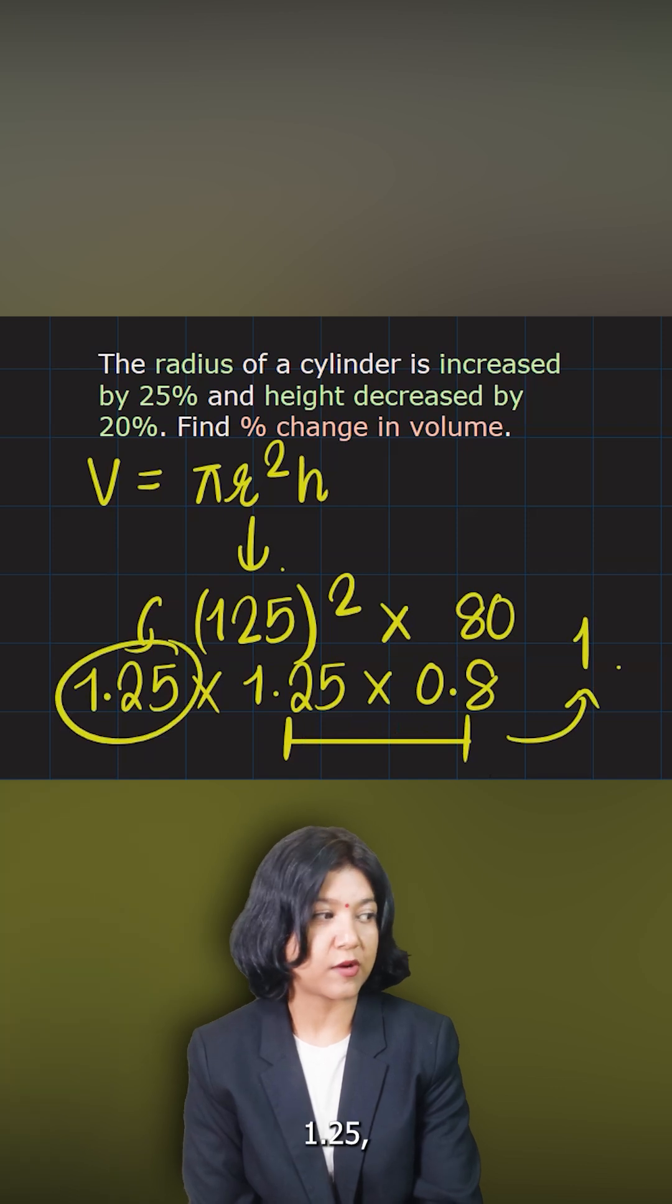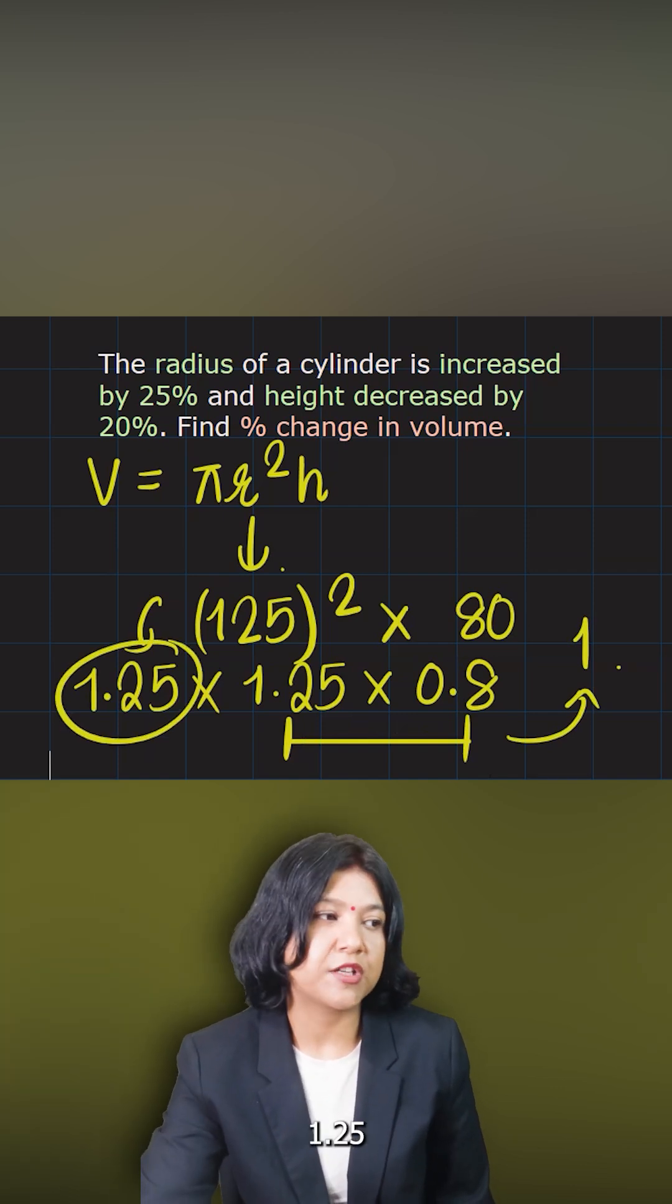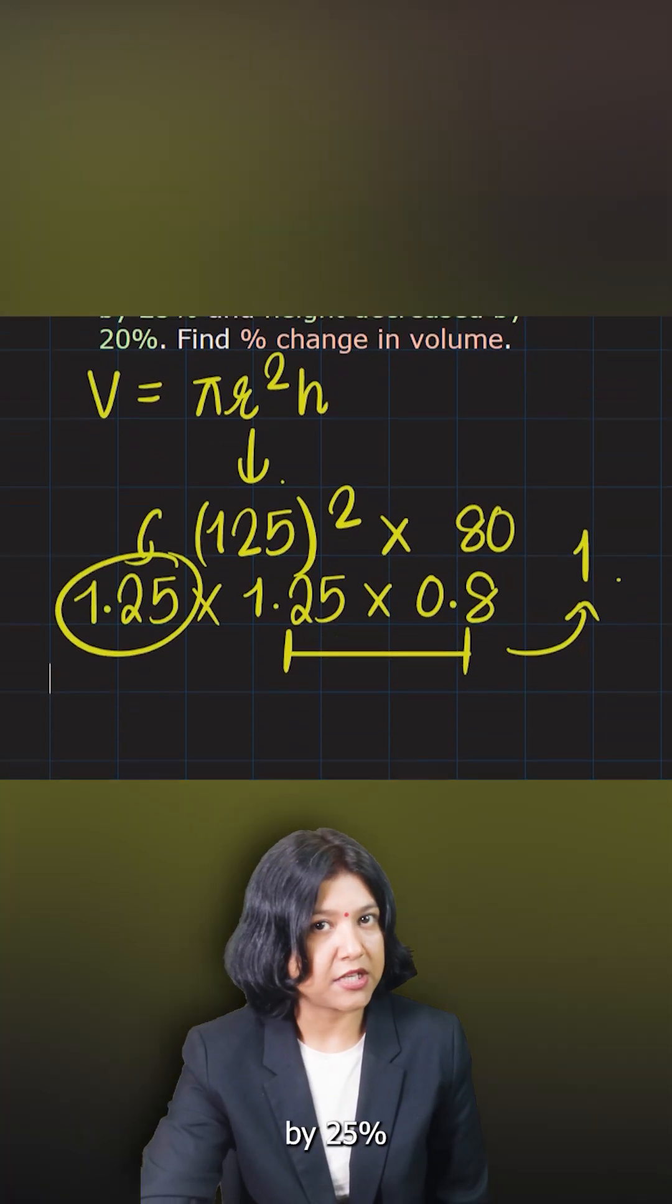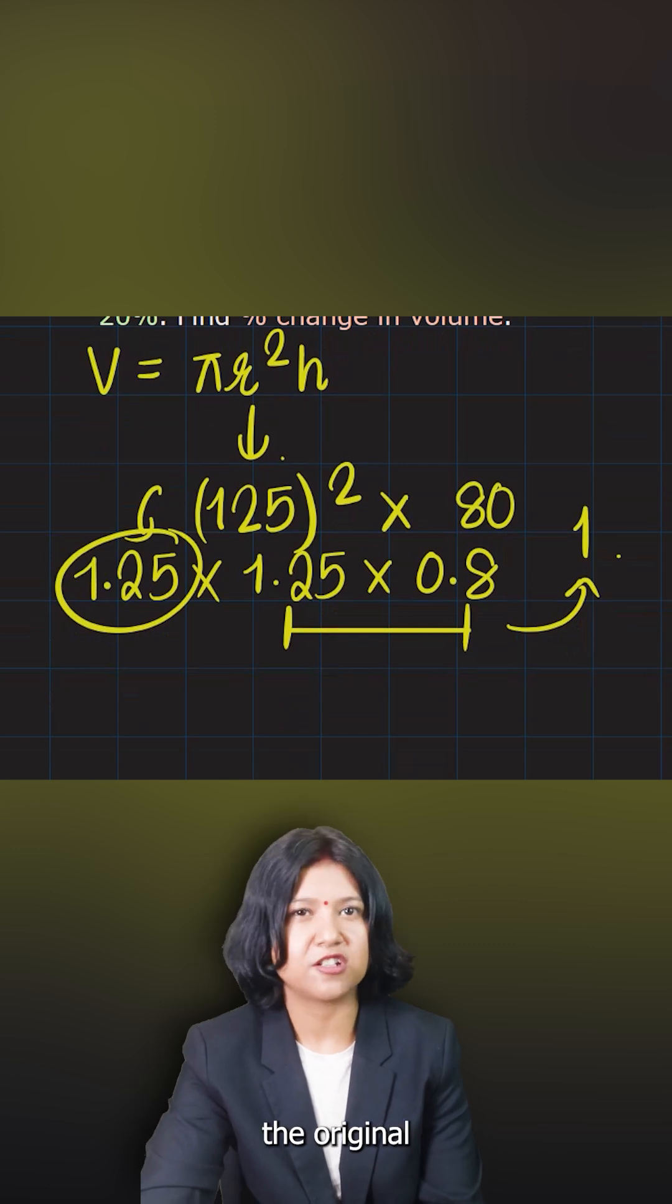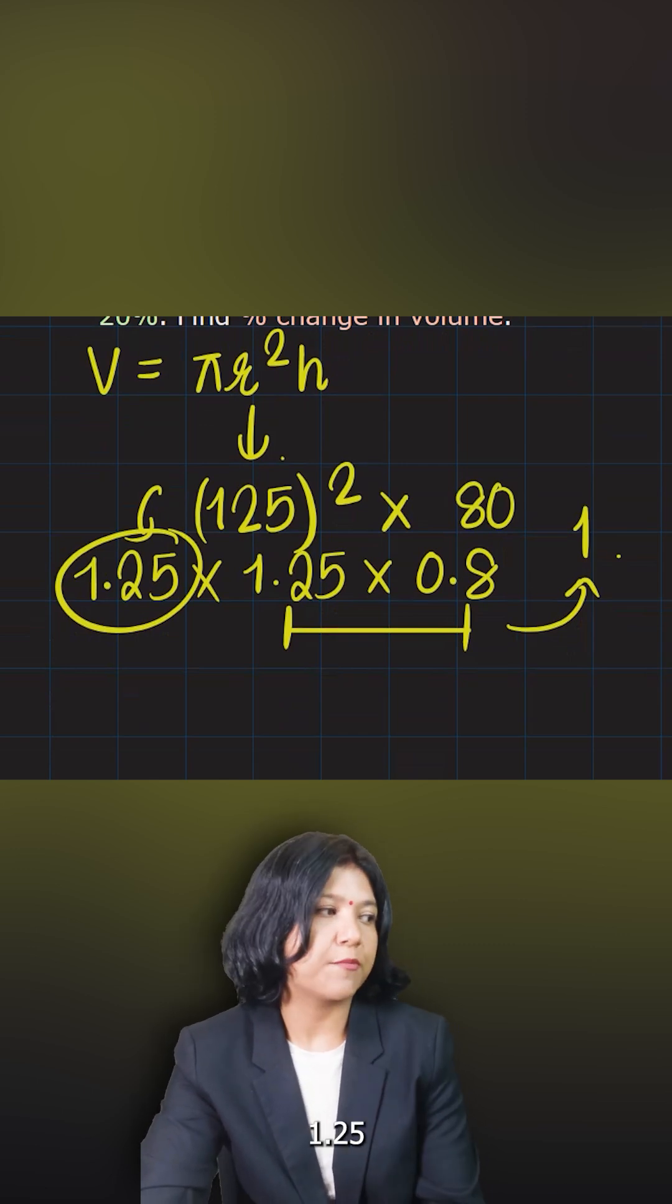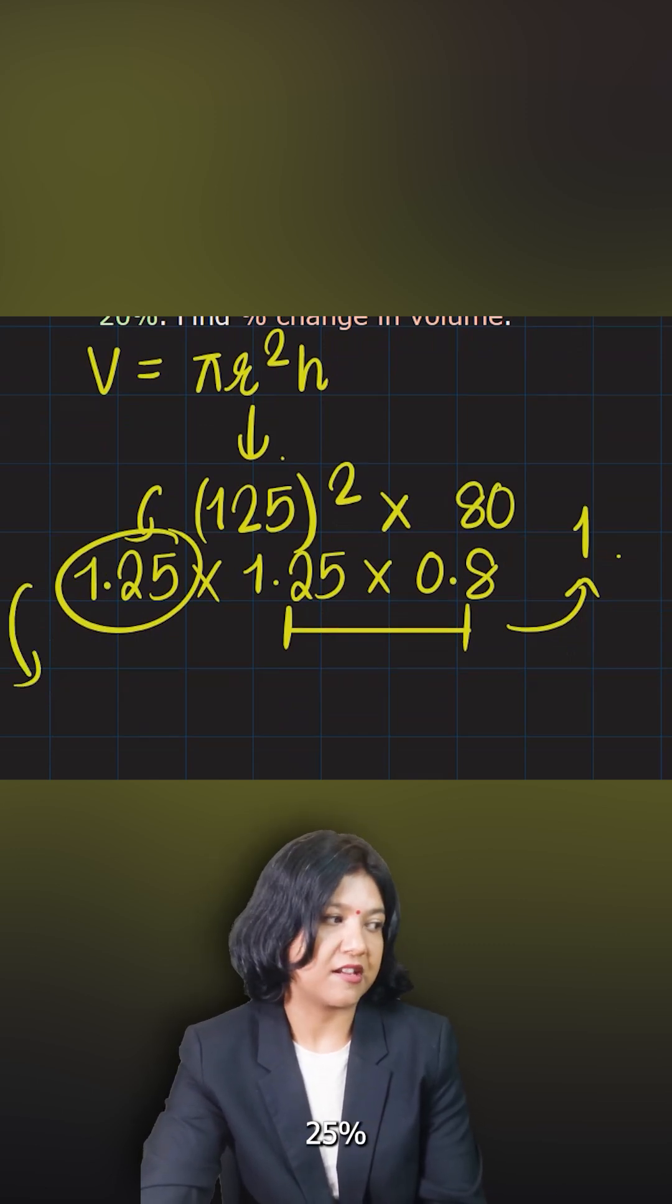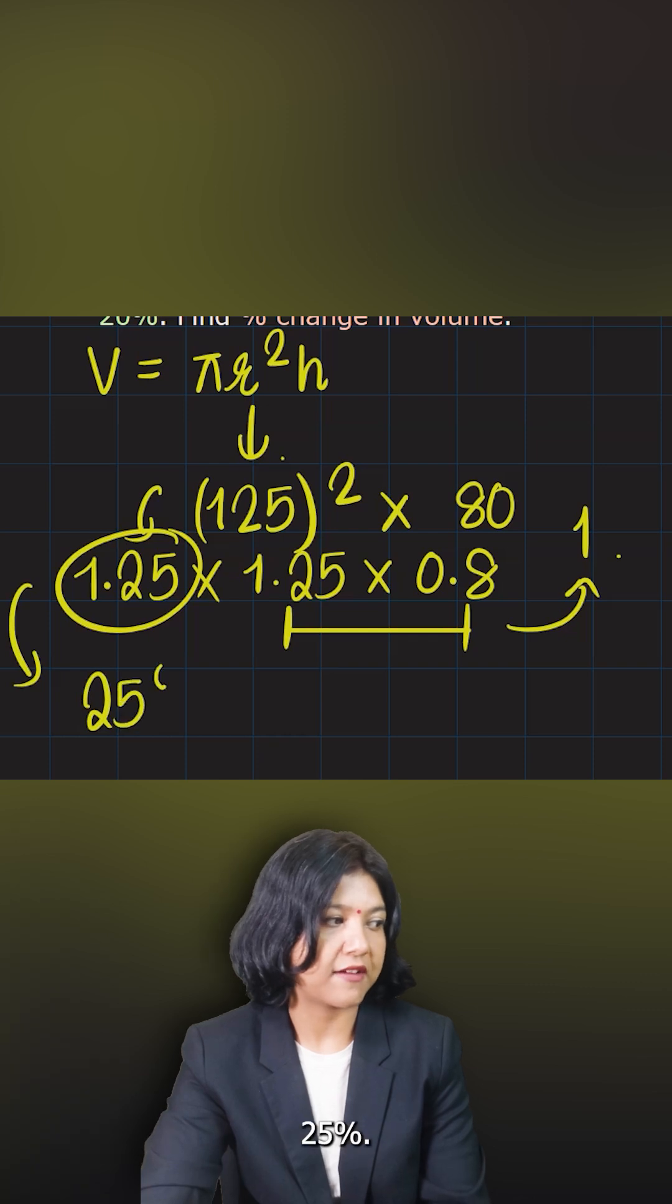So what's the answer? The answer is just 1.25, which means 1.25 tells you the increase by 25 percent because the original is always 100 percent and 1.25 just means 25 percent increase. So the answer is just 25 percent.